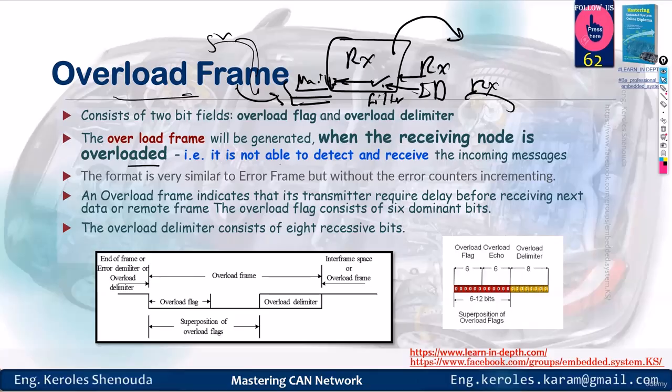The overload frame also starts with a transition from one to zero, followed by an overload flag, then an echo, and finally the delimiters. Its structure is mostly zeros, six zeros to be exact, followed by echo bits which are also zeros, and then the delimiters are ones. Now you might ask, isn't this structure the same as the active error frame?